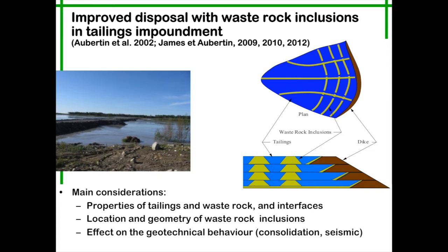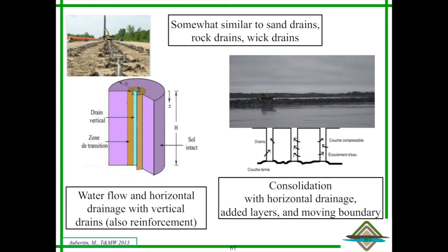When you're building these inclusions using the waste rock that you already have, and this is an open pit so there's plenty of it, you need to worry about or be aware of the properties of the tailings and the waste rock, and also what is happening at the interface between the two materials, the location and geometry of the inclusions, and the effect of these inclusions on the geotechnical behavior of the system, both from a static and dynamic point of view.